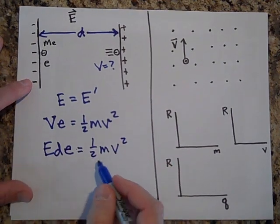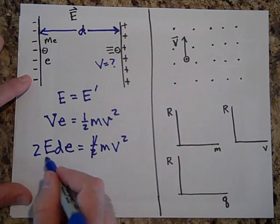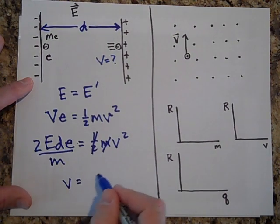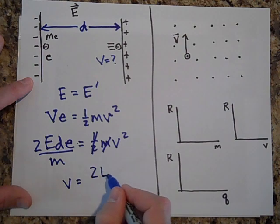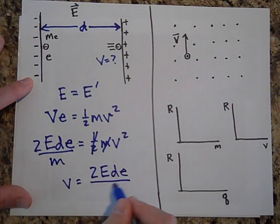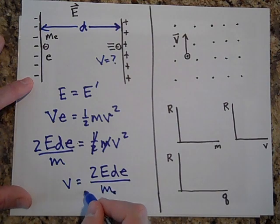So I can maybe multiply both sides by two and divide by m. So v is equal to two times the electric field times d times the charge in an electron over the mass of the electron, square root it.